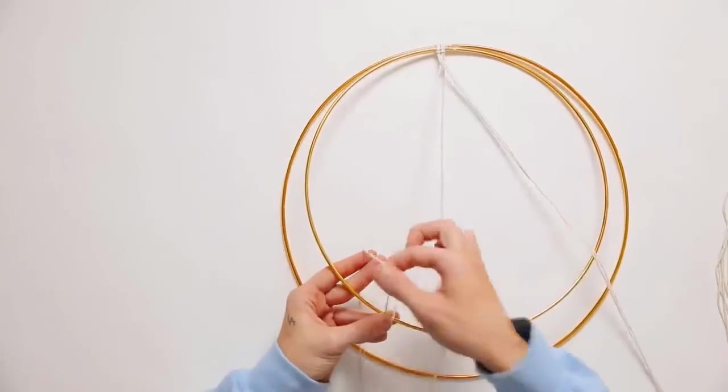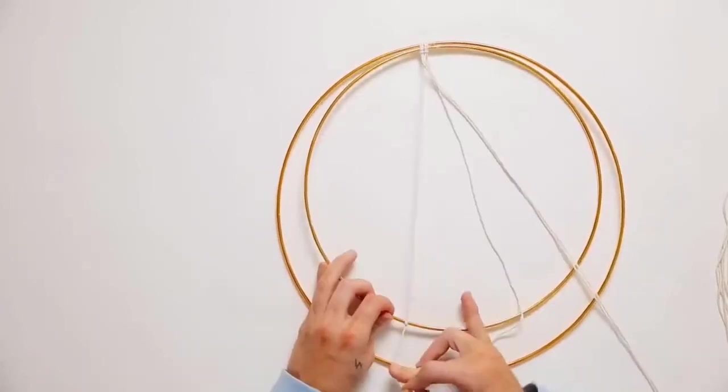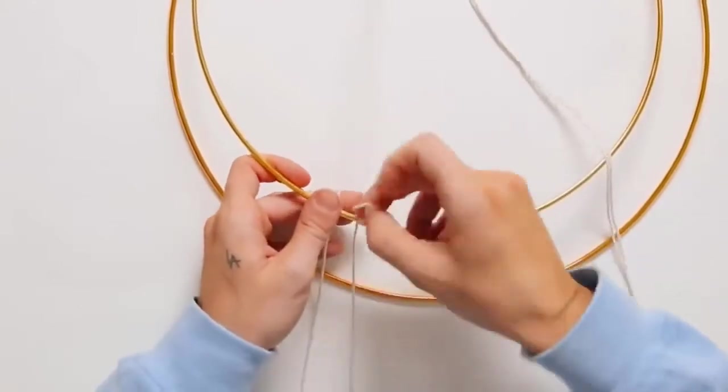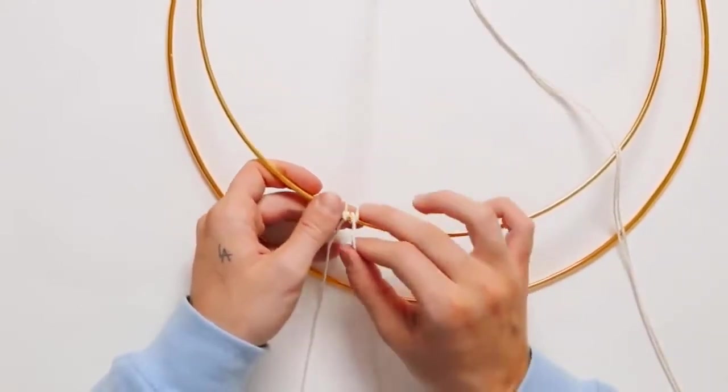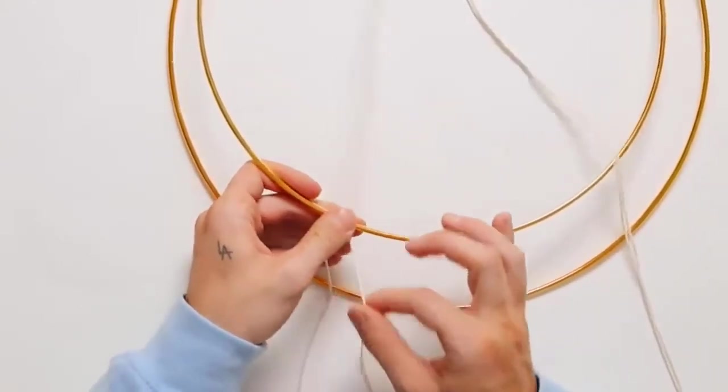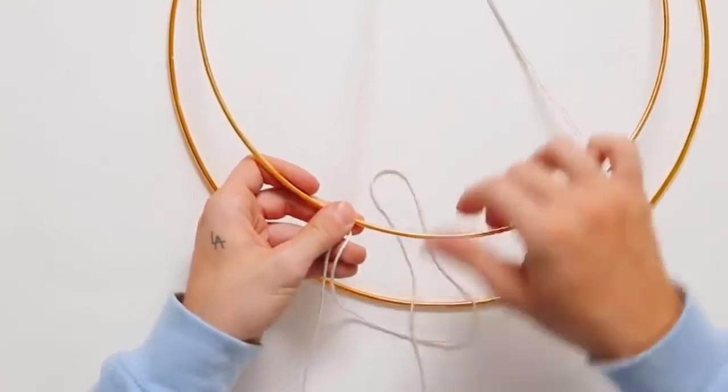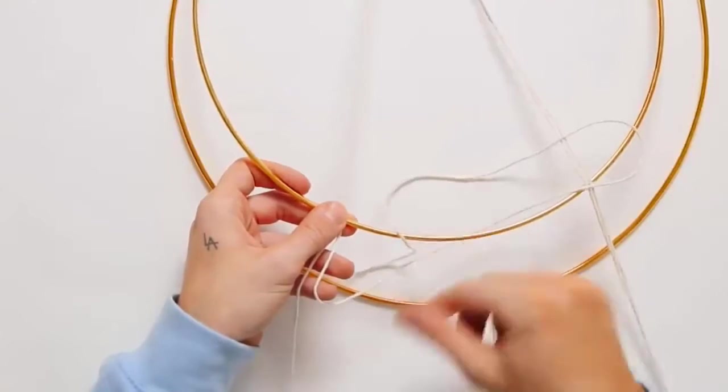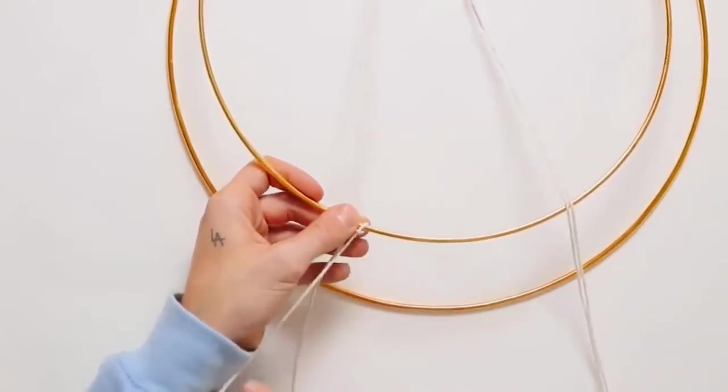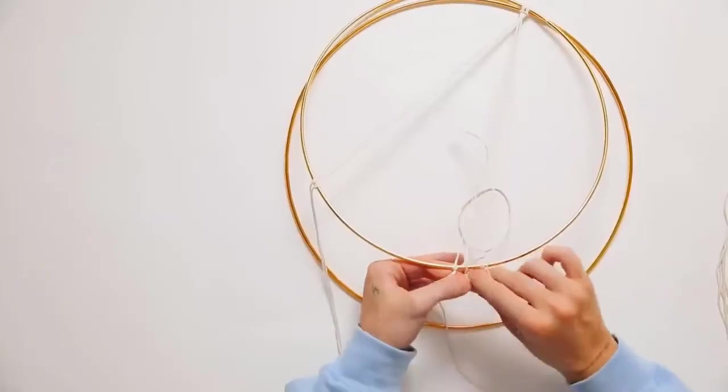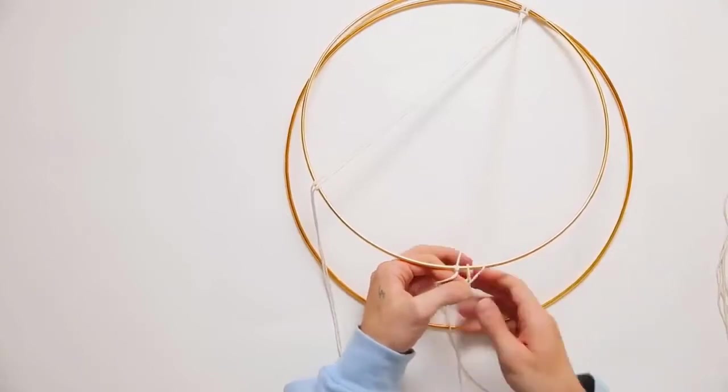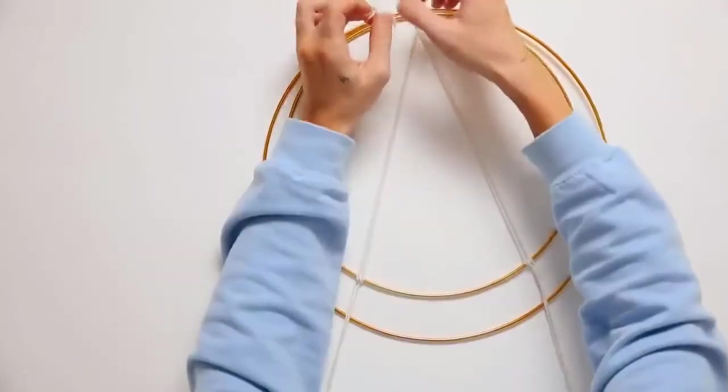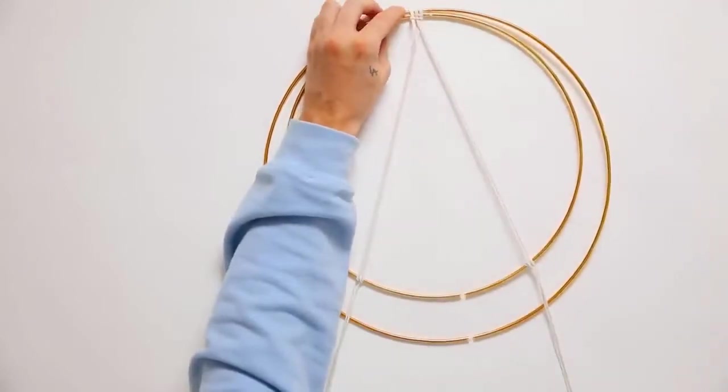Pull the ends through the loop of the center onto both rings, then cross them over. We're fastening these to the inside ring with a half hitch knot. Loop it around once, then loop it around one more time and pull the end of the string through that loop before pulling it tight. This securely fastens it down.